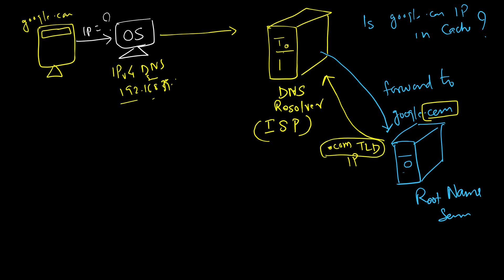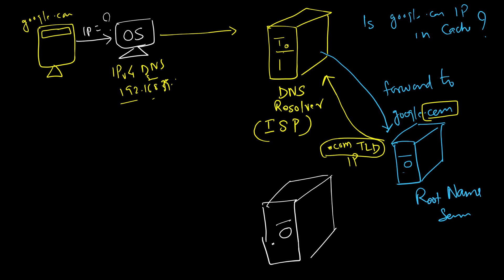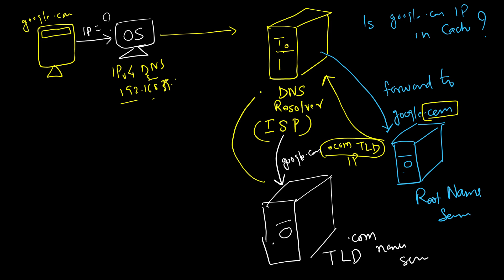The DNS resolver gets the IP of the .com TLD server and contacts it. The .com TLD Name Server is then queried for the IP of google.com. Again, this TLD server does not have the IP address itself, but it has the information of the server that can provide it — the Authoritative Name Server — and it returns the IP of that authoritative server to the DNS resolver.